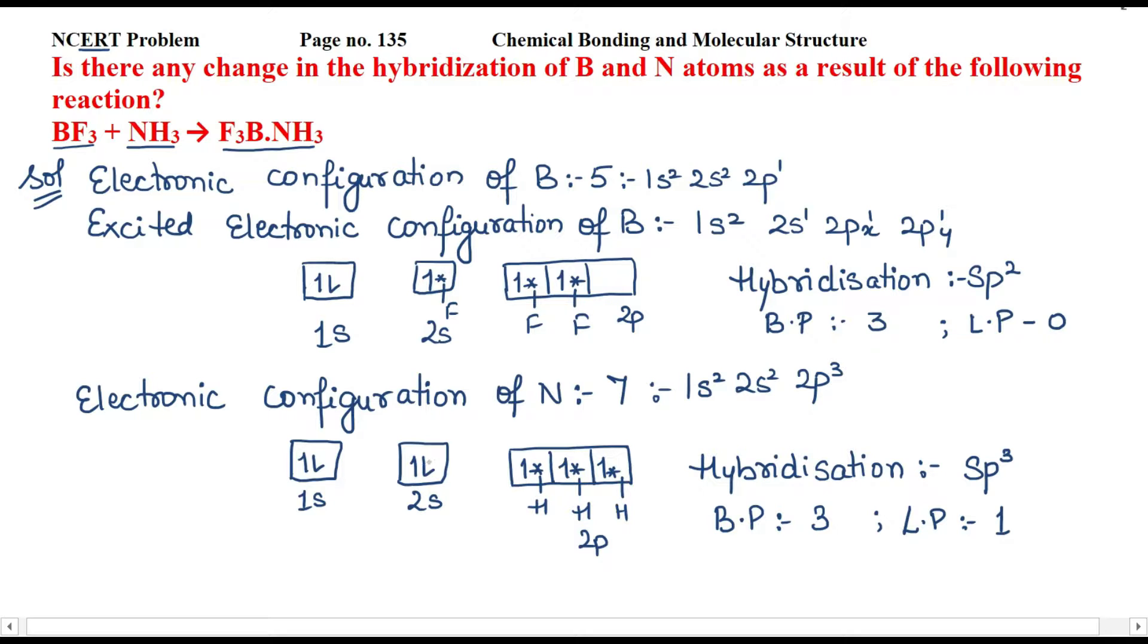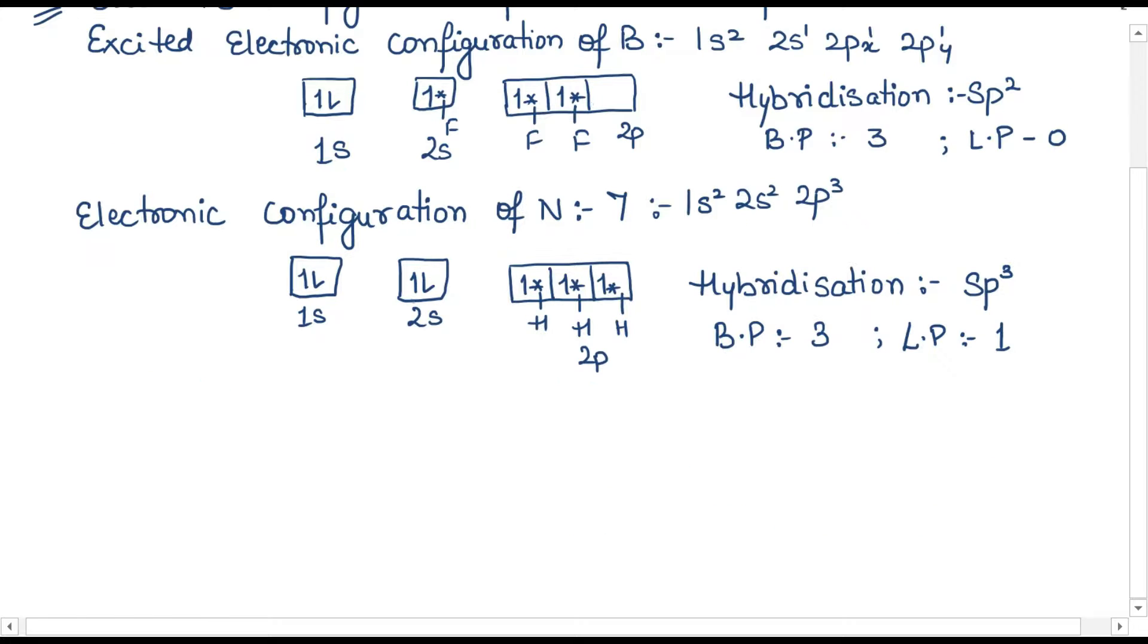What happens is that nitrogen size is very small, so loan-pair of electron repulsion starts to create. Ammonia has a lone-pair of electron which is shared with BF3 by coordinate bond. When the coordinate bond will be shared, these electrons can settle here. sp3.